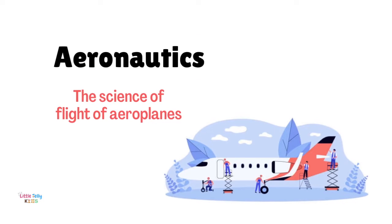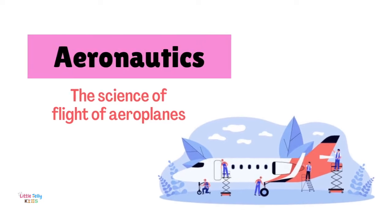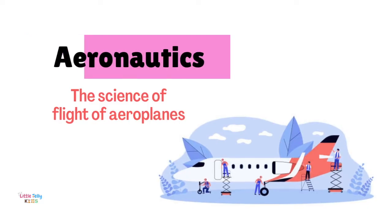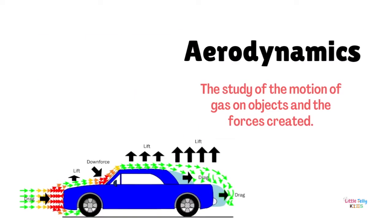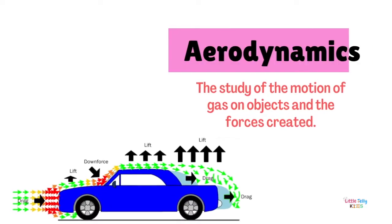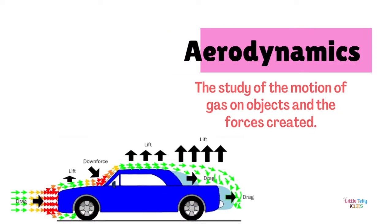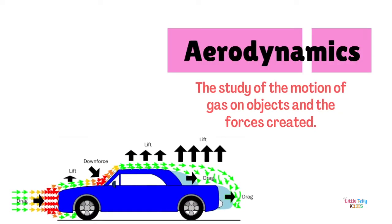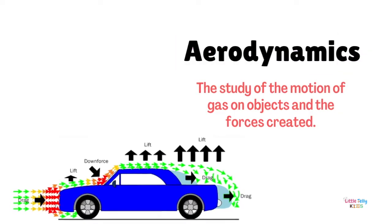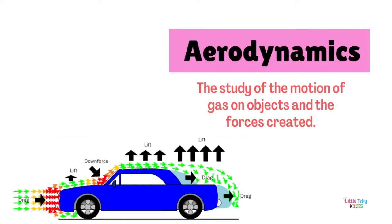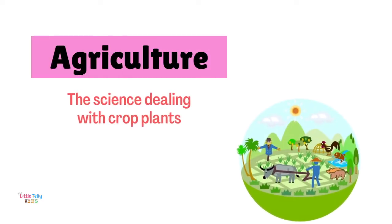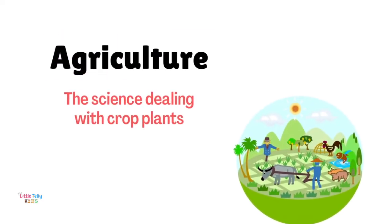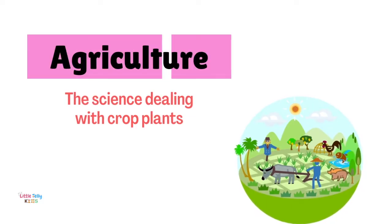Aeronautics: the science of flight of aeroplanes. Aerodynamics: the study of the motion of gas on objects and the forces created. Agriculture: the science dealing with crop plants.